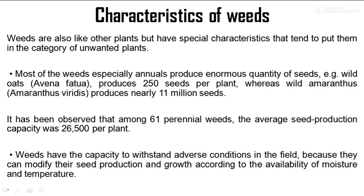Most weeds, especially annuals, produce an enormous quantity of seeds. For example, wild oats (Avena fatua) produces 250 seeds per plant, whereas wild Amaranthus (Amaranthus viridis) produces nearly 11 million seeds. Among 61 perennial weeds, the average seed production capacity was 26,500 seeds per plant.